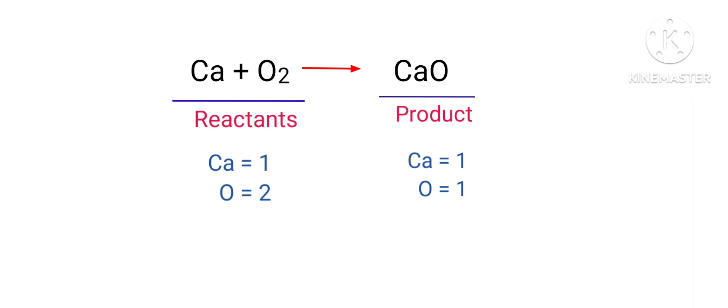If you look at this equation, the equation is not balanced. On the reactants side, there are one calcium atom and two oxygen atoms present. On the products side, there are one calcium atom and one oxygen atom present. The number of atoms are not balanced on both sides.